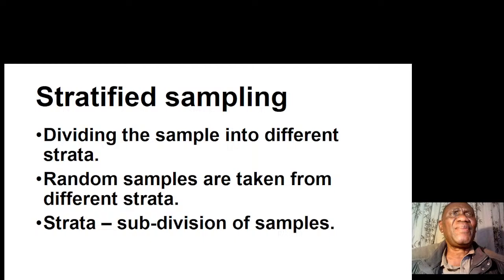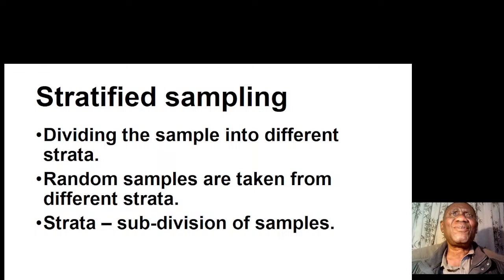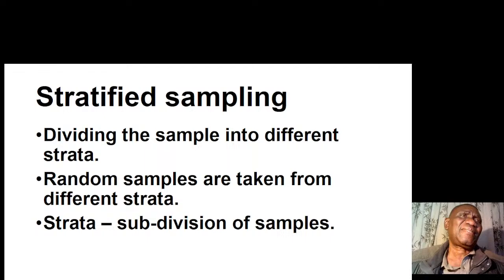You now have random samples being taken from different strata. Let's say you divided your area into natural regions 2, 3, and 4 — similar to what we have in Murewa and Mutoko. Within each natural region or strata, you take random samples. Strata are simply the subdivisions of your sampling area.